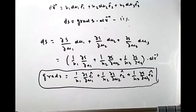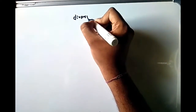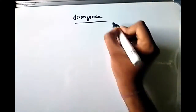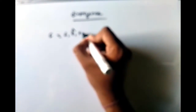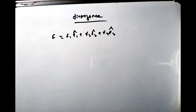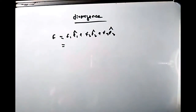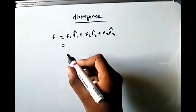Now we will derive the expression for divergence. The divergence of a vector function F is given by: div F = (1/h₁h₂h₃) [∂(F₁h₂h₃)/∂u₁ + ∂(F₂h₃h₁)/∂u₂ + ∂(F₃h₁h₂)/∂u₃].